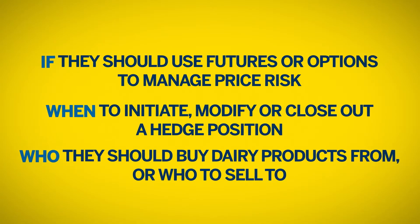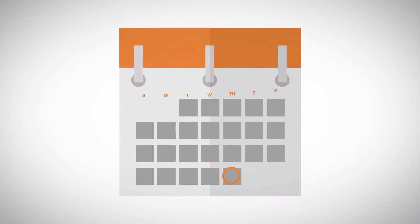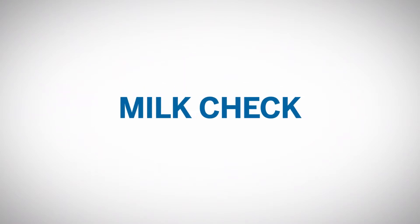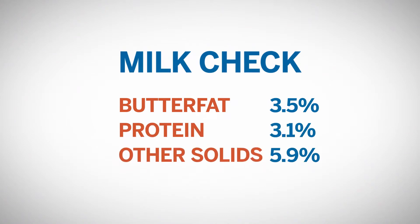The foundation of the dairy basis is the milk check that every dairy producer receives at the end of each month. The milk check includes details that outline how the components of the milk that the producer shipped for the month — the milk's butterfat, protein, and other solids — compare to the standardized levels of these components for which the producer is paid.